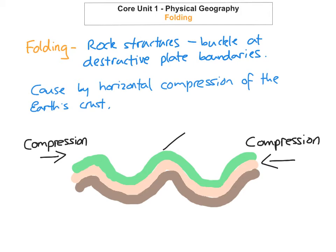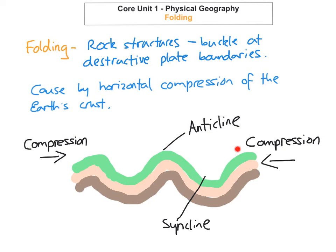The first part is the anticline. The anticline is the upfold — it's the top part of the actual fold. You also have the syncline, which is the bottom part. The syncline is the downward fold, or the hollow in between the anticlines. So here again, that would be another syncline.